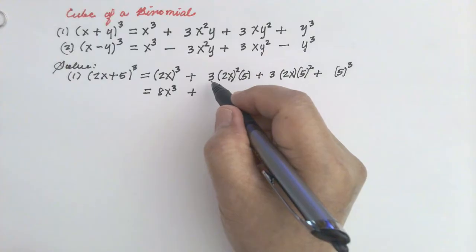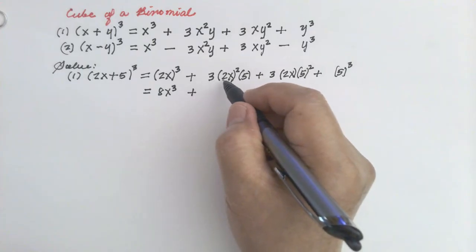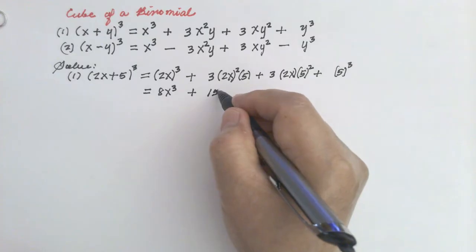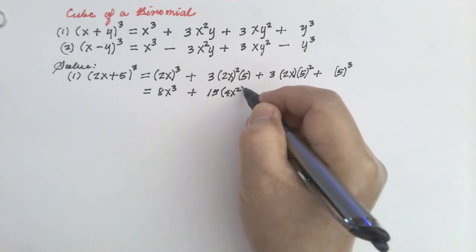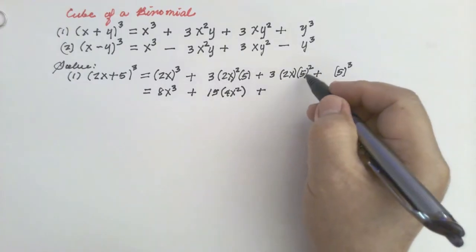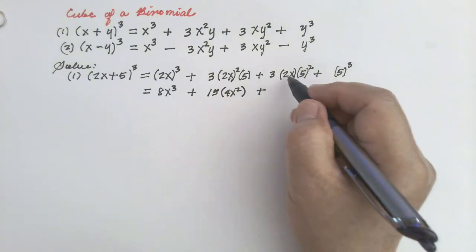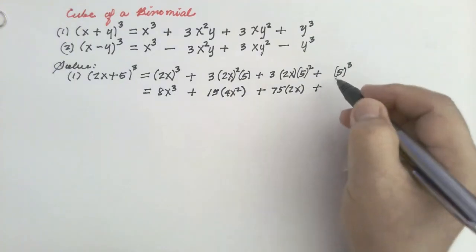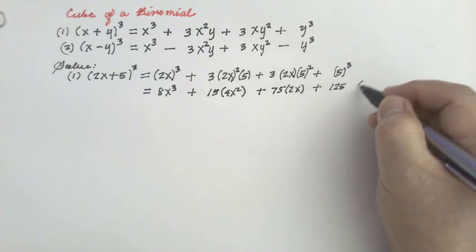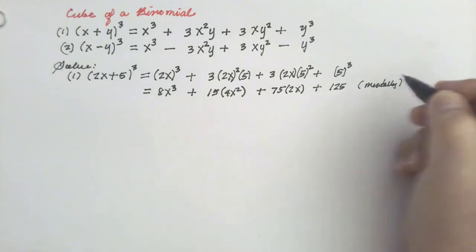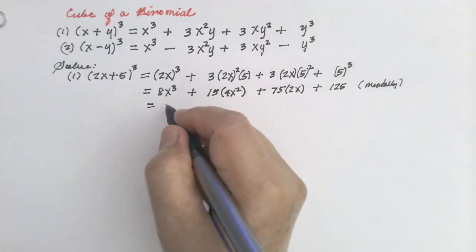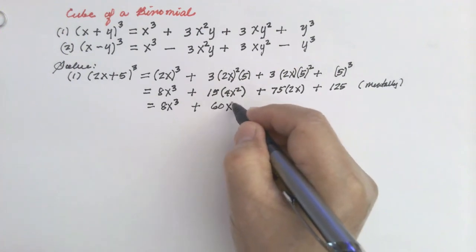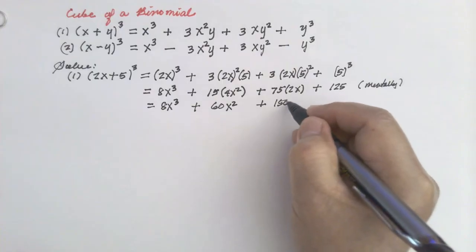Now simplify. Multiply 2x by itself 3 times to get 8x cube. Then 5 times 3 is 15, and squaring 2x gives 4x square, so 4 times 15 is 60x square. This will become 25 times 3 is 75, times 2x gives 150x. Multiplying 5 by itself 3 times gives 125. The final answer is 8x cube plus 60x square plus 150x plus 125.